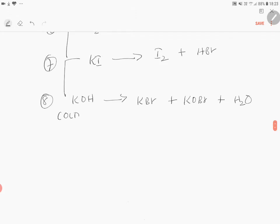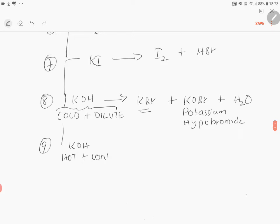This is cold and dilute potassium hydroxide. This is potassium bromide - all of you know this is potassium bromide - sorry, potassium hypobromide. Potassium hypobromide, I'm sorry. Similarly, next reaction: if bromine reacts with hot and concentrated potassium hydroxide...